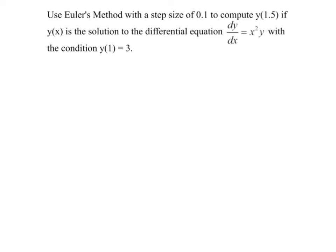So using Euler's method with a step size of 0.1 to compute y(1.5) if y(x) is the solution to the differential equation dy/dx equals x squared y, with the initial condition that y(1) is equal to 3. Okay. So this is kind of my systematic approach to this. I make a table.